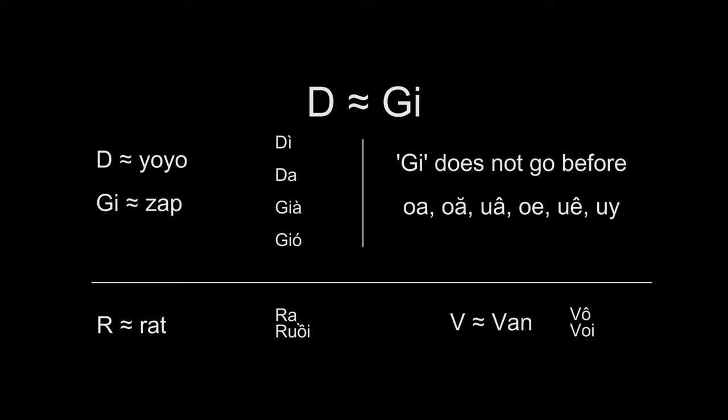In the video Single Consonants, I said the D makes a yuh sound, and in this video, I said G-I makes the zh sound. However, many people need to change the sounds between these two. For example, some people say yi, ya, ya, ya, or people can say zi, zà, zà, zà.